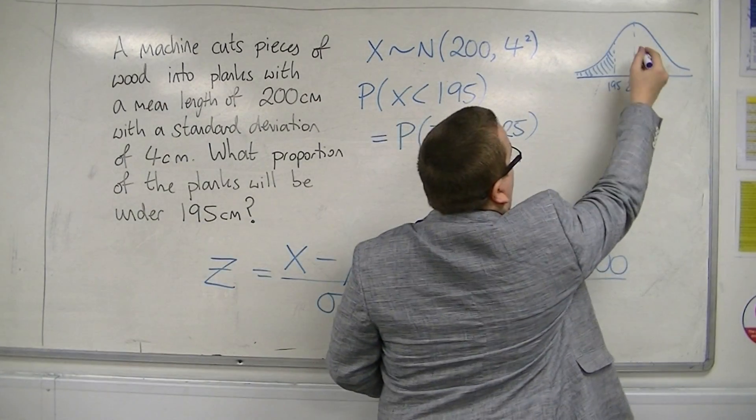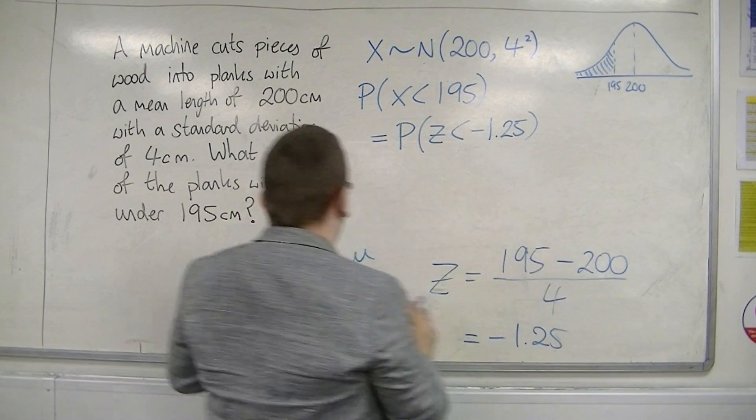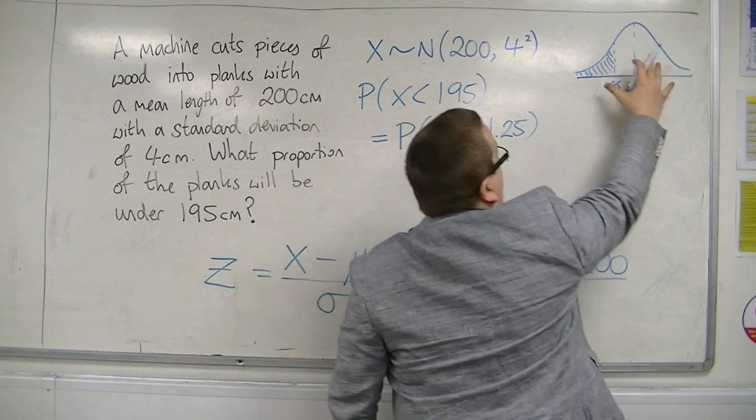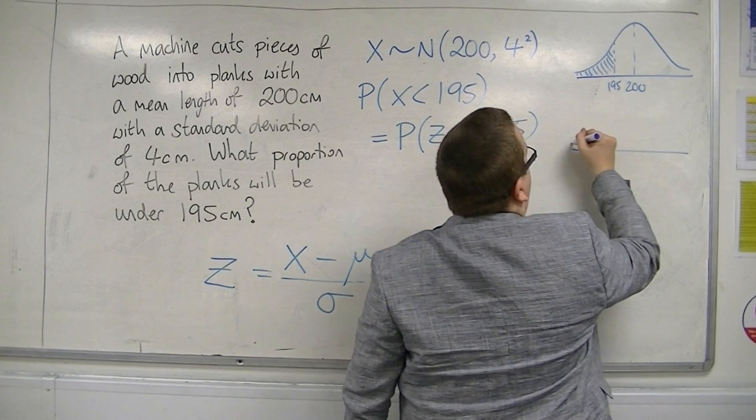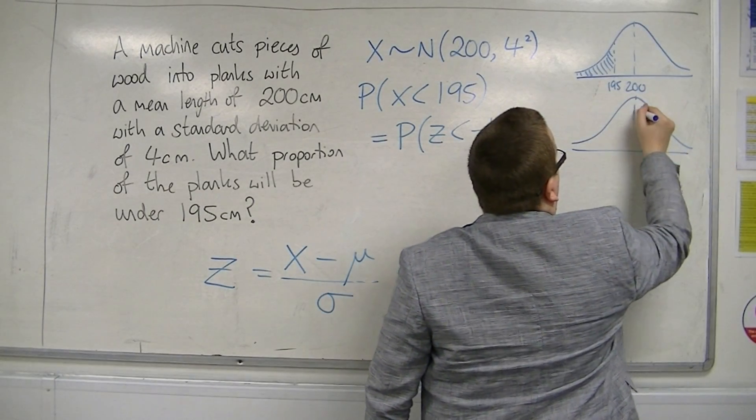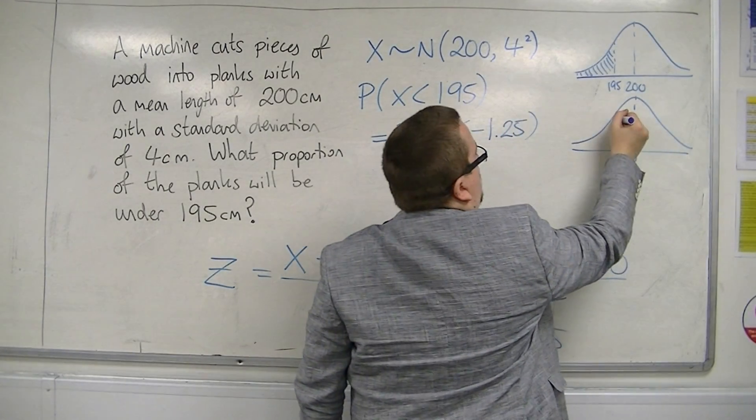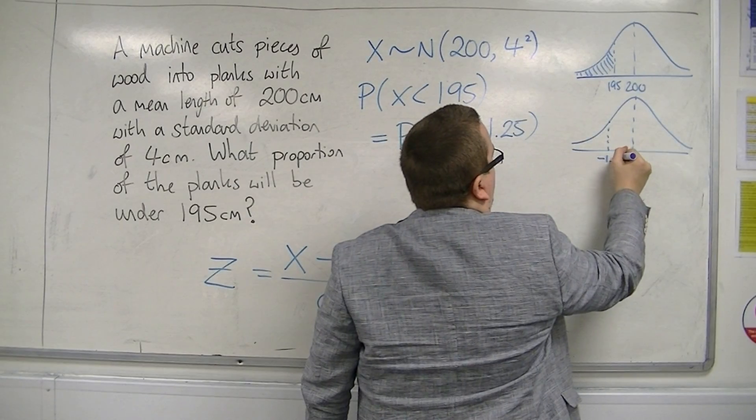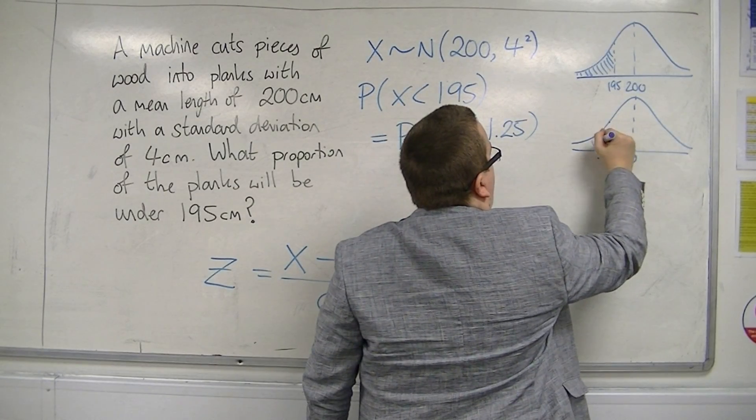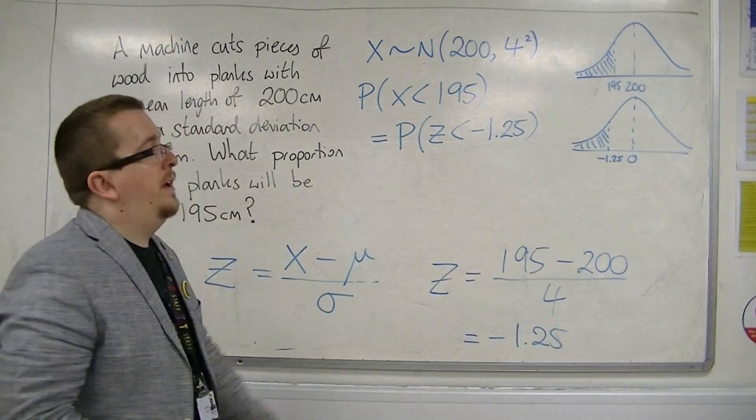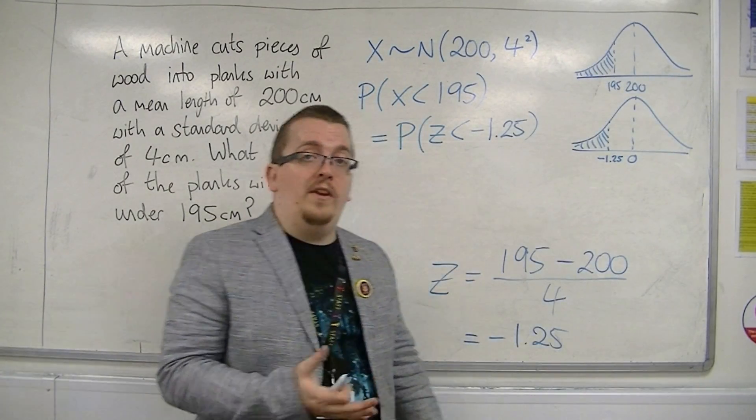Because in the background, what's going on, is that we've reverted and used this to go from this bell curve to the standardized normal bell curve, to find that area. Because these areas are going to be the same.